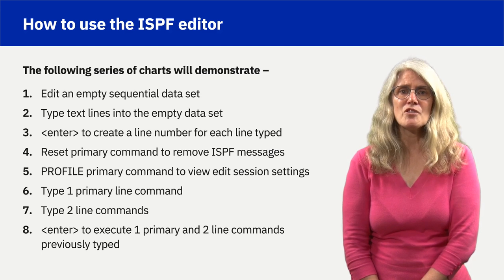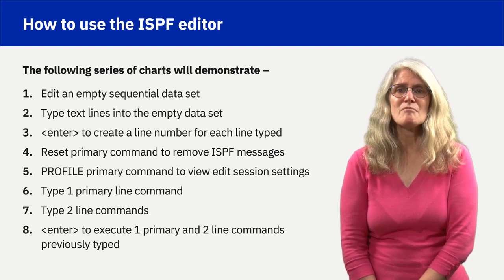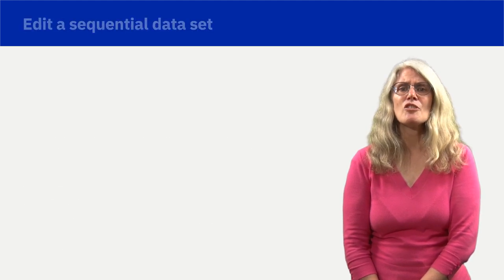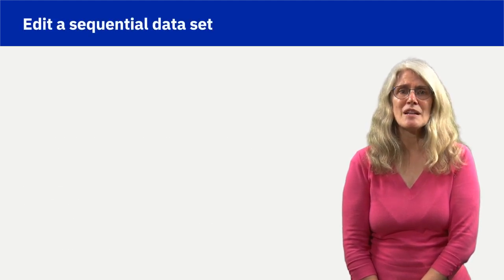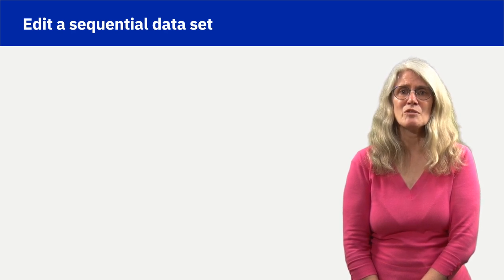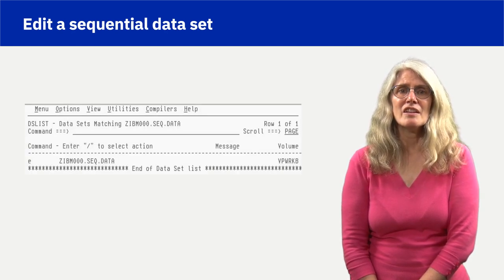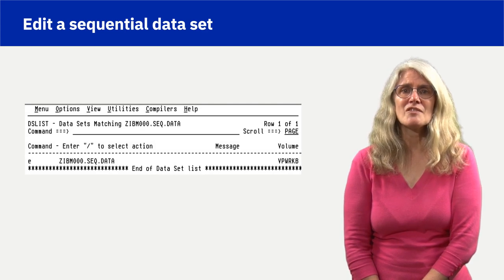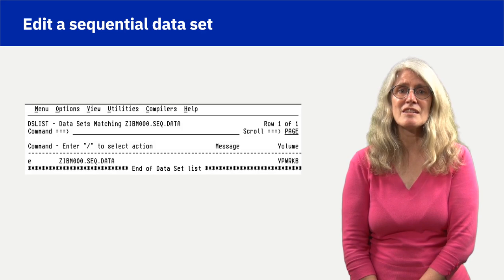The best explanation of using the ISPF editor is a simple and visible example. The next several charts will read each line by saying the number, then reading the text to the left of the number. There are numerous ways to edit a ZOS dataset or UNIX file. In the chart shown, E is entered to the left of the dataset name from the dataset list utility panel to begin an edit session.